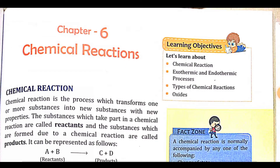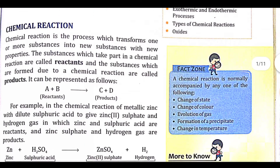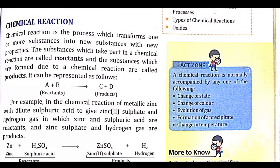We are learning Standard 8, ICSC Science Lesson No. 6: Chemical Reactions. The first topic is Chemical Reactions. A chemical reaction is a process which transforms one or more substances into new substances with new properties — substances chemically fuse to create a new substance with new properties.